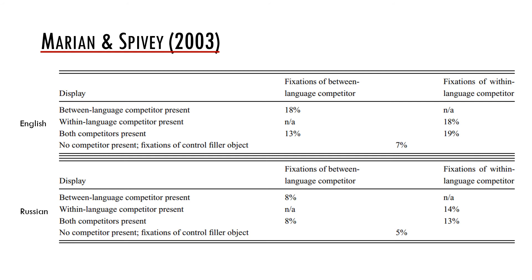Here we can see the results. The upper table summarizes results of the English experiment and the lower table summarizes results of the Russian experiment. The tables show percentages of trials in which bilingual participants made eye movements to the competitor items or corresponding fillers. The scores are generally lower than in the first experiment, where the between-language distractor was attended to in about 30% of trials. In the 2003 study, the score was 18% for English and 8% for Russian in the between-language condition. In the English experiment there was a significant difference between fixations of the between-language competitor and the control filler, but this difference was not present in the Russian experiment.